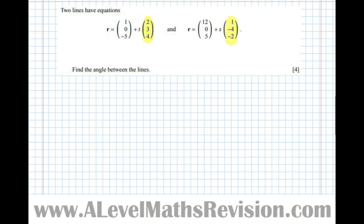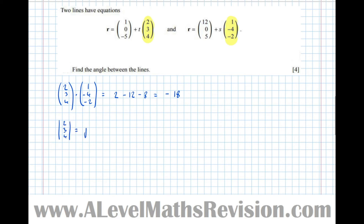So let's follow the method we did before. We want the dot product: (2, 3, 4) dot (1, -4, -2) equals 2, take 12, take 8, equals minus 18. The length of (2, 3, 4) equals the square root of 2 squared plus 3 squared plus 4 squared. So 16 plus 9 is 25, plus 4 is 29, so root 29. And the length of (1, -4, -2) equals the square root of 1 squared plus 4 squared plus 2 squared, equals root 21.